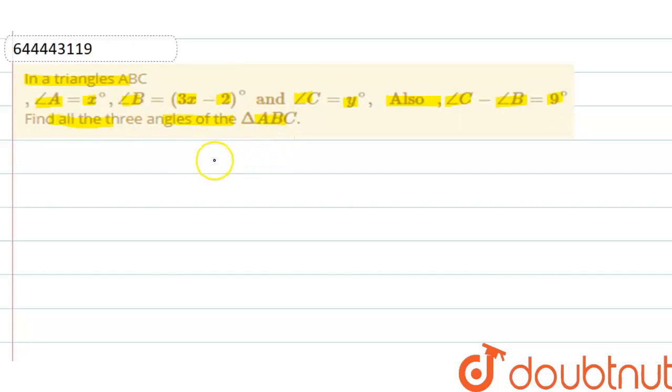So we know that sum of all angles in a triangle is angle A plus angle B plus angle C, that is equals to 180 degrees. Let it be equation number 1.